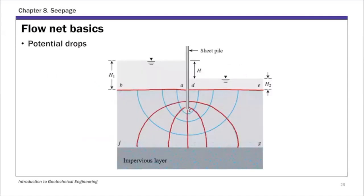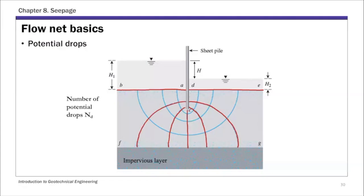Using the same flow net, a potential drop is the head loss between two adjacent equal potential lines. Each time you cross from one equal potential line to the next, that's one potential drop delta h. Counting for this example flow net, we have six potential drops from upstream to downstream, so Nd equals six.